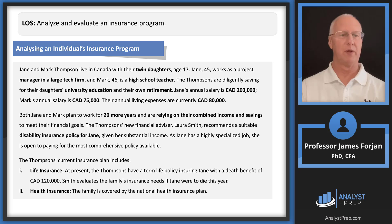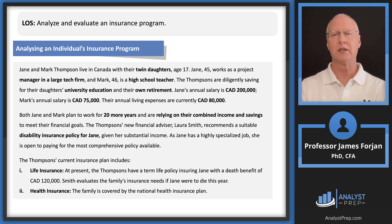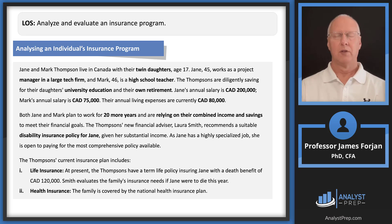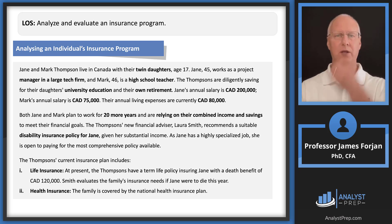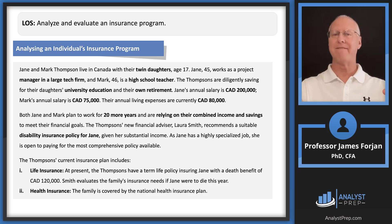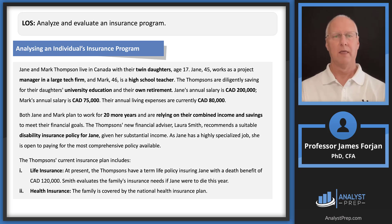Here's the comprehensive example we'll start with. Jane and Mark Thompson live in Canada with twin daughters. Jane works as a project manager in a large tech firm and makes $200,000 Canadian dollars a year. Mark is a high school teacher making $75,000 a year. They're saving for their daughters' education and their own retirement. Annual living expenses are just $80,000 Canadian dollars.